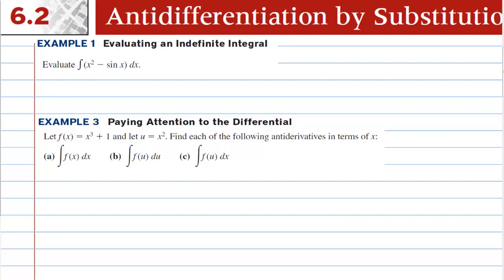This is section 6-2 on anti-differentiation by substitution. In example 1, we're going to evaluate an indefinite integral. The antiderivative of x squared is 1 third x to the third, and the antiderivative of negative sine of x is plus cosine of x, and then we have plus c. The derivative of this would be x squared minus sine of x, and the derivative of the constant would be 0.